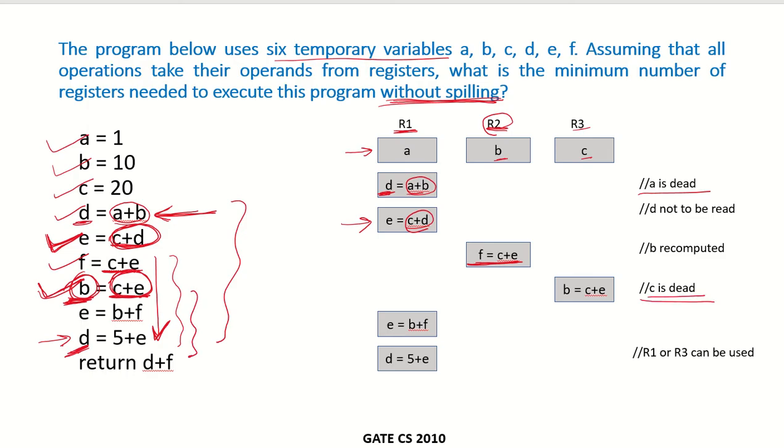So we can use register R3 to store the new value of b which is the sum of c and e.